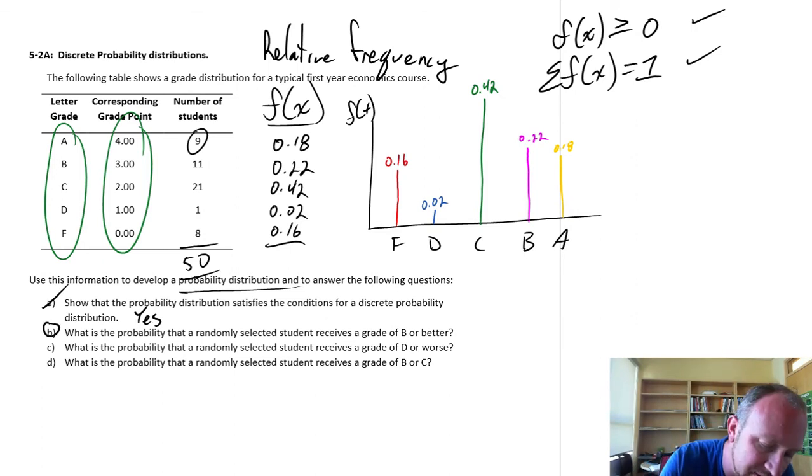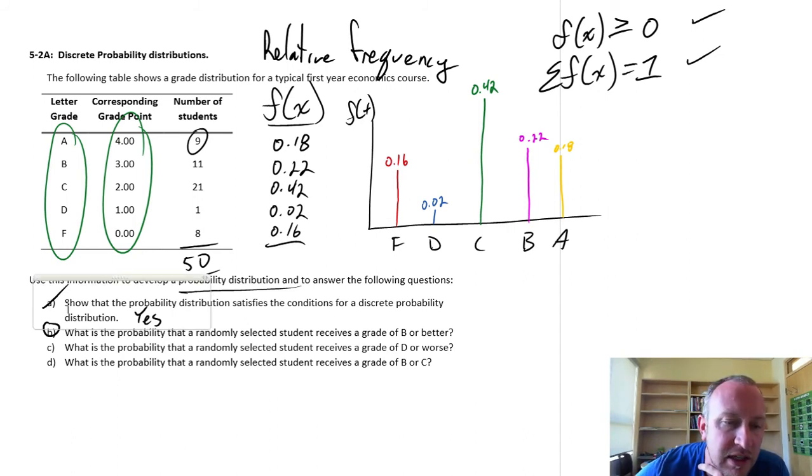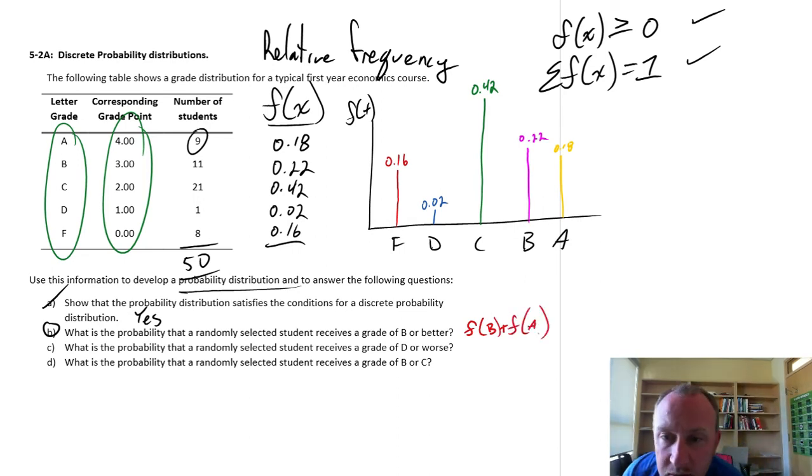B. What is the probability that a randomly selected student receives a grade of B or better? What we're actually looking at here, and this may sound familiar, is we're looking at the union of two events. So, we're looking at the union between getting a B or an A. So, using the addition law that we've already talked about before, calculating these unions. Back then, we would have used something like this. So, B union A. Right? So, this is the union of these two events.